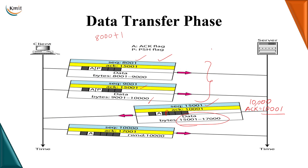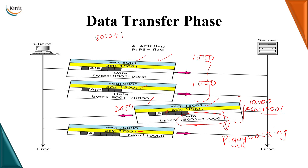The client then acknowledges the receipt of 2000 bytes of data up to sequence 17000 and expects the next sequence number 17001. Here we also make use of the window size — for example, window size of 10000 — telling the server that the client's receive window is only 10000 and it cannot send beyond this. This completes the data transfer phase.